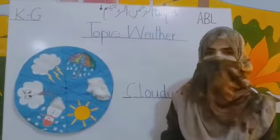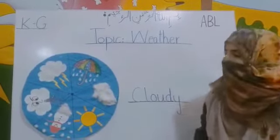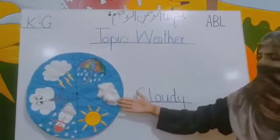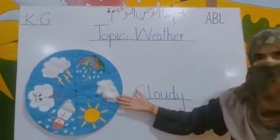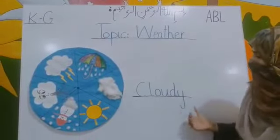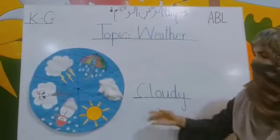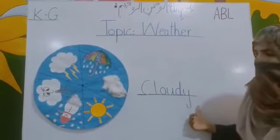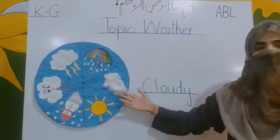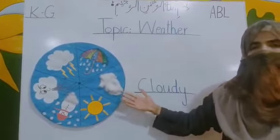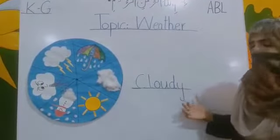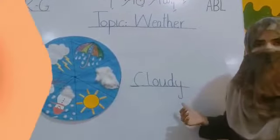Next, cloudy. When we can see so many clouds in the sky, we say it's cloudy.